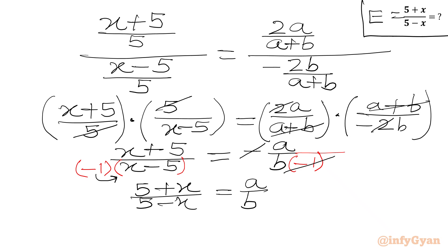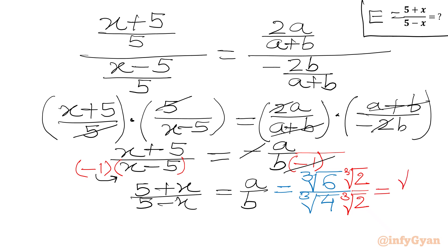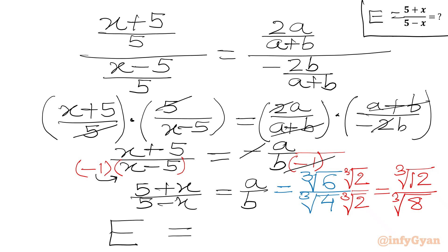Now substituting back, a was cube root 6 and b was cube root 4, so the expression equals cube root 6 over cube root 4. To rationalize the denominator, multiply by cube root 2 over cube root 2: numerator becomes cube root 12, denominator becomes cube root 8 which equals 2. So our final answer is cube root 12 over 2.